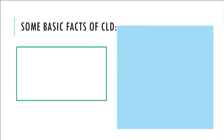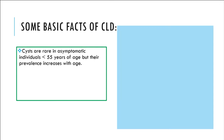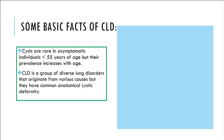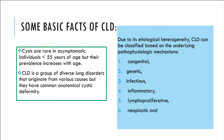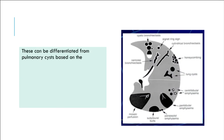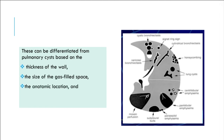Some basic facts of CLD: cysts are rare in asymptomatic individuals under 55 years of age, but their prevalence increases with age. CLD is a group of diverse lung disorders that originate from various causes but share a common anatomical cystic deformity. Due to its etiological heterogeneity, CLD can be classified based on underlying pathophysiologic mechanisms: congenital, genetic, infectious, inflammatory, lymphoproliferative, neoplastic, and smoking-related.